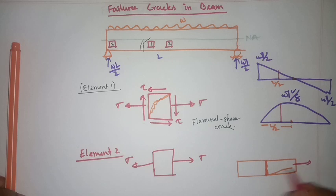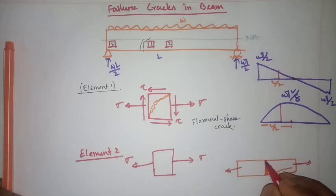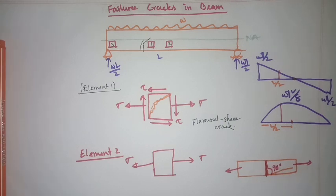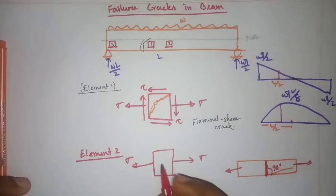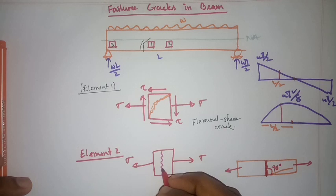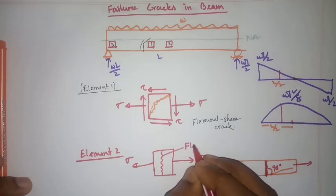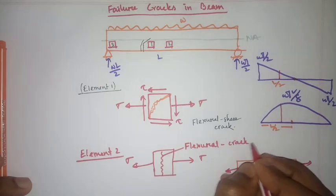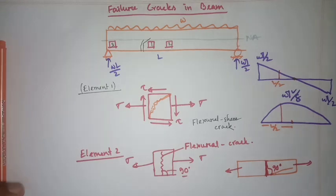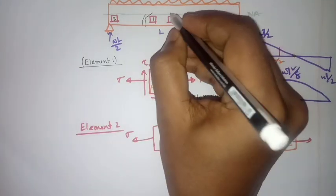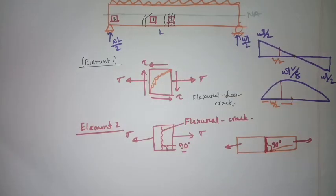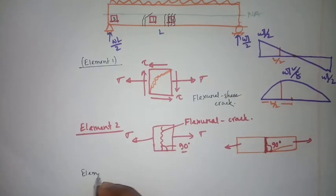Due to these two bending stresses, the crack will be vertical — at 90 degrees from the edge of the beam section. This kind of crack is called a flexure crack, which develops at 90 degrees. The crack pattern will look like this.